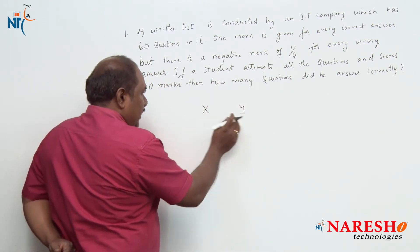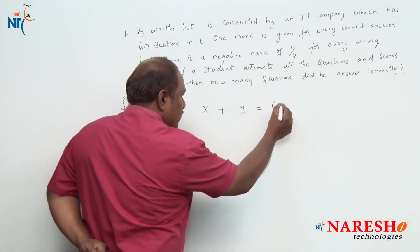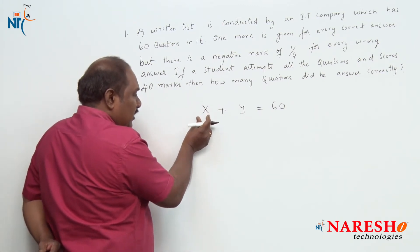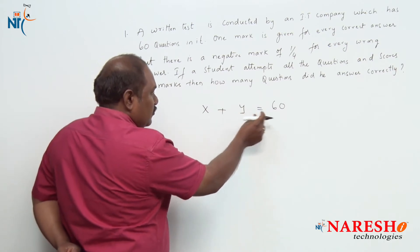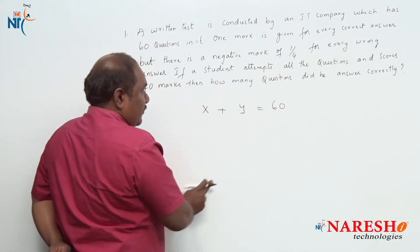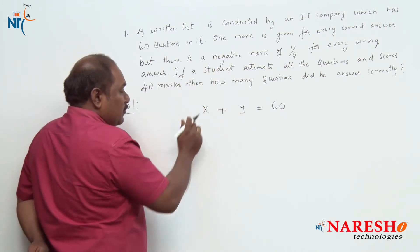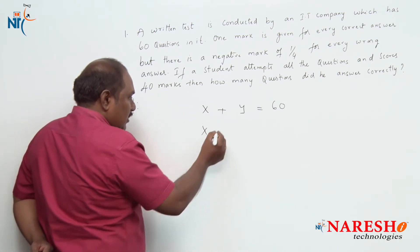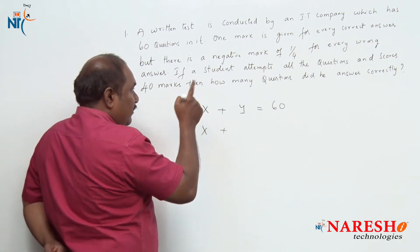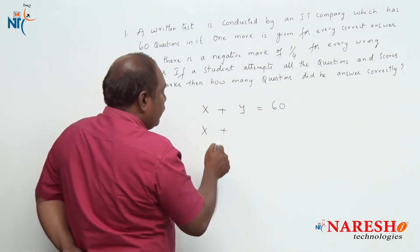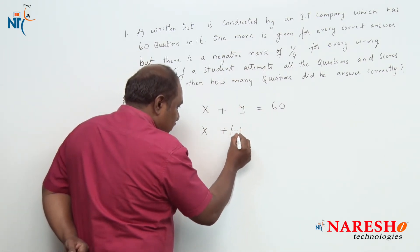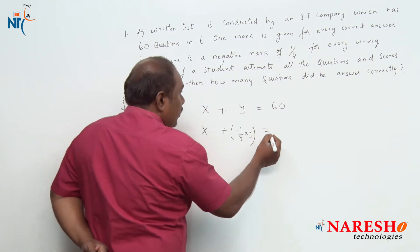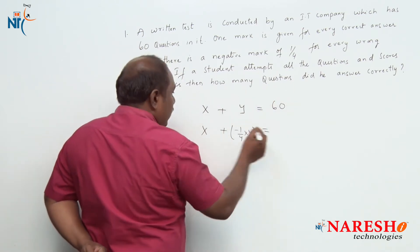Then definitely x plus y should be equal to 60 — that is, the total number of questions answered correctly plus the number answered wrongly should equal 60. For every correct answer he scores one mark, so 1 times x, plus for every wrong answer he loses one-fourth mark, so minus 1/4 times y should be equal to 40.